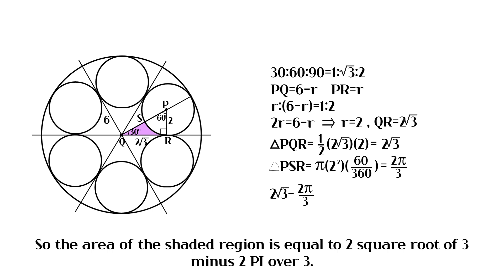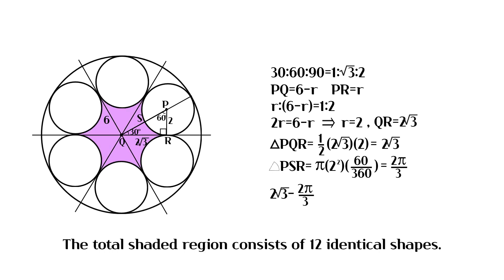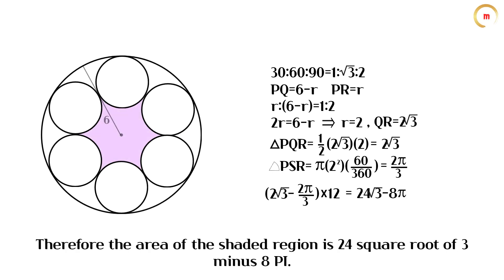The total shaded region consists of 12 identical shapes. Therefore the area of the shaded region is 24 square root of 3 minus 8 pi.